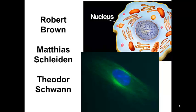Next, we have three scientists who were focused on the study of the nucleus. Robert Brown was the first to discover the nucleus. Matthias Schleiden found that the nucleus controls cellular development, and Theodore Schwann found that all animal and plant cells contain nuclei.